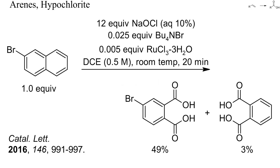Naphthalenes are, like phenols, also electron-rich and easy to oxidize. In this example, a biphasic mixture of 2-bromonaphthalene, aqueous sodium hypochlorite, 0.5% of ruthenium chloride, and a phase transfer catalyst was stirred at room temperature for only 20 minutes. Mostly the non-brominated benzo group was oxidized to a brominated phthalic acid.